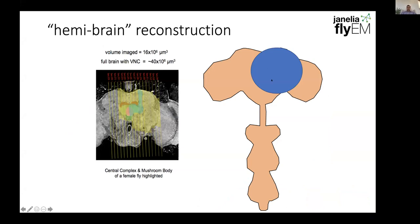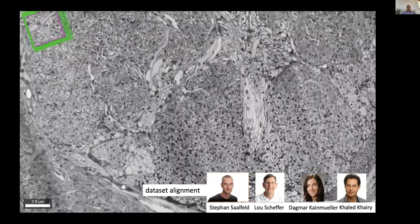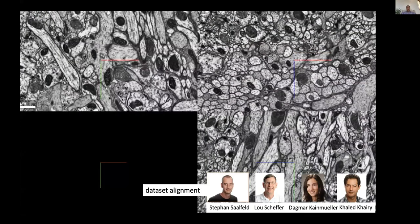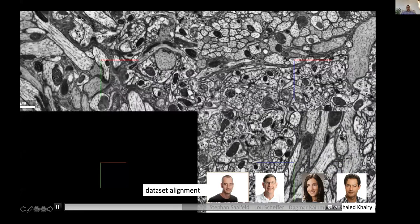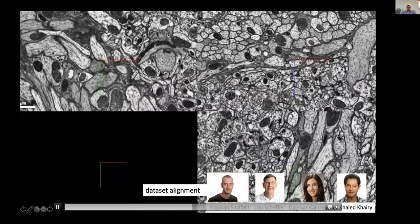The hemibrain reconstruction — this shows the fly brain and its nerve cord, indicating approximately where the hemibrain lies. We actually do section the dataset into thicker slabs, about 20 micron thick sections, each of which can be independently imaged with a focused ion beam SEM system. This allows us to solve technical issues with the limited field of view of focused ion beam, while also letting us do imaging in parallel with multiple FIB-SEM machines to accelerate the process. This shows alignment done by the alignment group, showing the quality of the data in three different orientations.